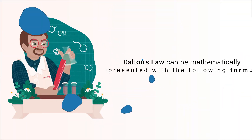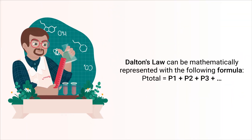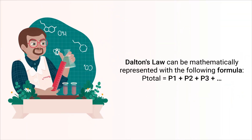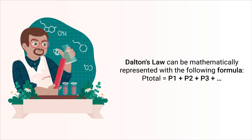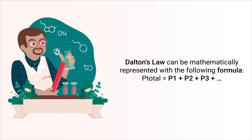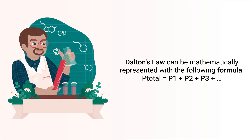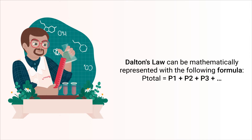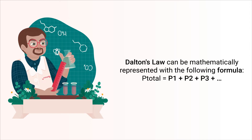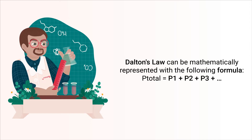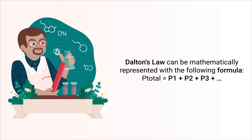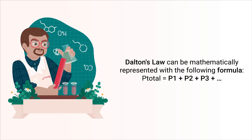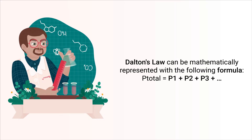Dalton's Law can be mathematically represented with the following formula: P_total = P1 + P2 + P3 + etc., where P_total is the total pressure of the mixture and P1, P2, and P3 etc. are the partial pressures of each individual gas in the mixture.